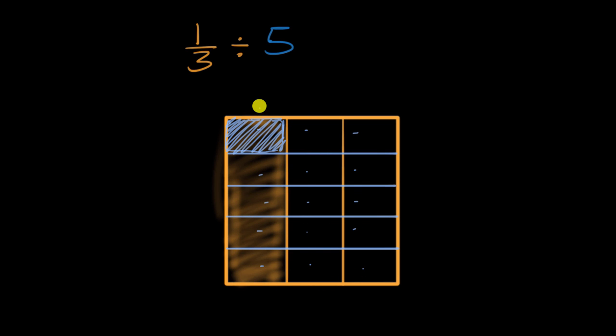Or you could just say, look, I had one, two, three thirds, and now each of those have been split into one, two, three, four, five equal sections. So three times five is fifteen. So each of these is a fifteenth.